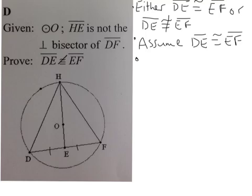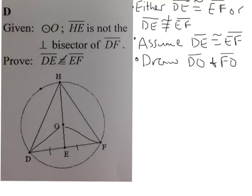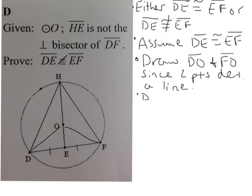So, well, when I see circles, I often think about drawing radii because we know that they're congruent and they can be helpful. So, draw DO and FO since two points determine a line. Then, DO is congruent to FO, all radii congruent.